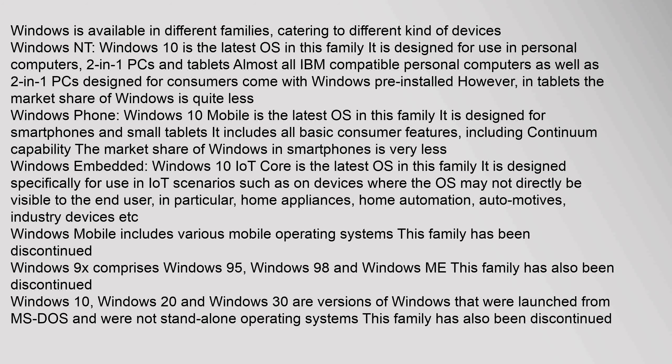Windows Phone: Windows 10 Mobile is the latest OS in this family. It is designed for smartphones and small tablets and includes all basic consumer features, including continuum capability. The market share of Windows in smartphones is very low. Windows Embedded: Windows 10 IoT Core is the latest OS in this family, designed specifically for use in IoT scenarios.